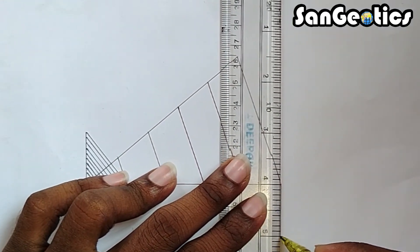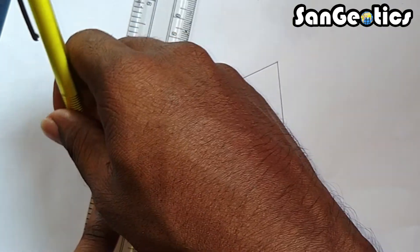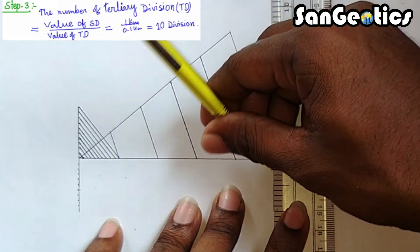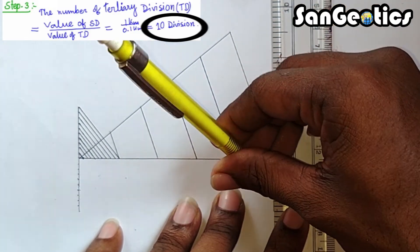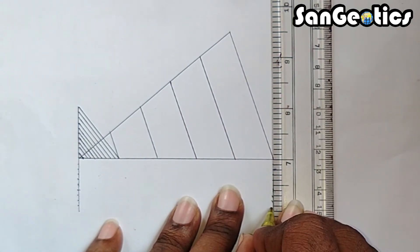To construct tertiary division, we draw two vertical lines and divide it into 10 equal parts with the help of graphical scale. Also, you can divide it with the help of pair divider, as you wish.